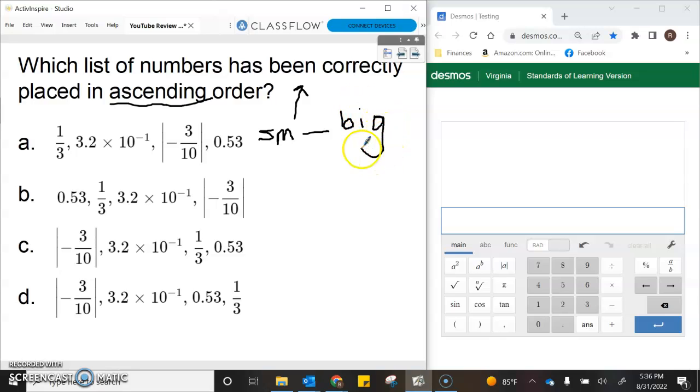We're going to start by putting these numbers in the calculator. So one-third, we have to make it a percent, so we're going to multiply by 100.